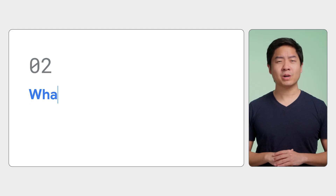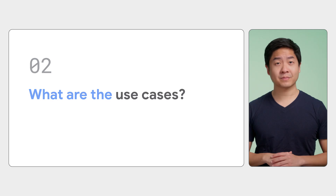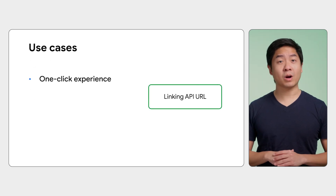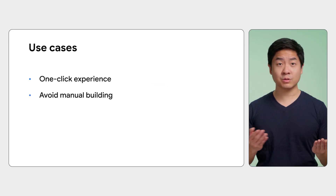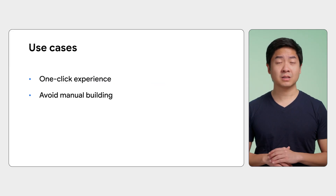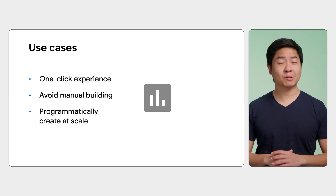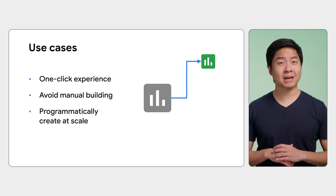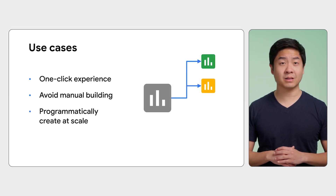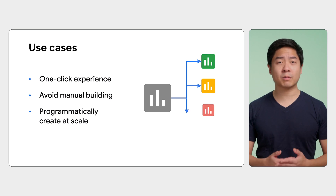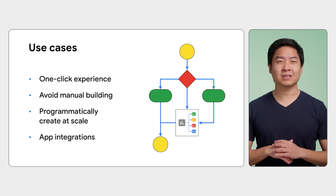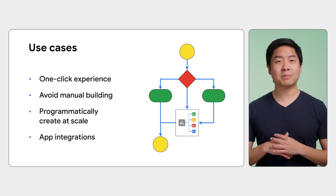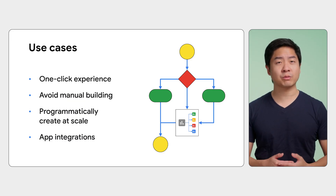What can you use the Looker Studio Linking API for? You can use it to create a one-click report creation experience for your stakeholders. You can simplify report creation so users don't have to manually build a report. You can also create multi-reports at scale by programmatically calling the Linking API URL to duplicate or create new reports without doing it manually. Lastly, you can integrate the Looker Studio Linking API into application workflows to auto-generate reports.